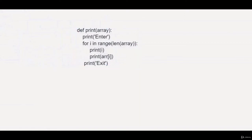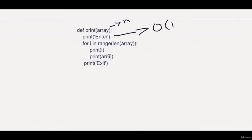Let me show you an example. We have a function that prints all the numbers from an array, and we have a for loop. Suppose we get an array which may have a length of n, and then we print one function — this is just a single line print. This will be O(1) because it doesn't take any kind of time. The most important thing are the for loops when calculating the performance of your code.